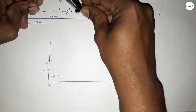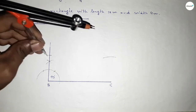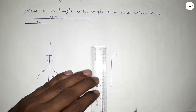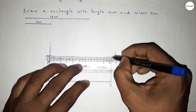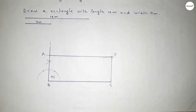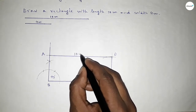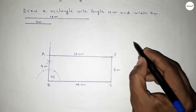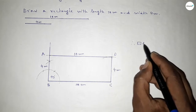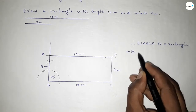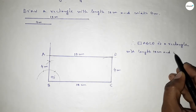Putting the compass here and cutting here so both curves intersect at point D. Now joining C and D and joining this side. This side is 10 centimeter, this side is 10 centimeter, this side is 4 centimeter, and this side also 4 centimeter. Therefore rectangle ABCD is a rectangle with length 10 centimeter and breadth or width 4 centimeter.